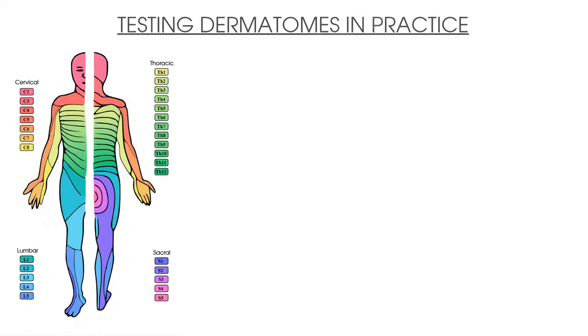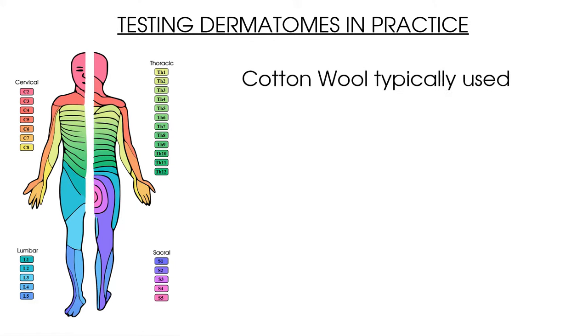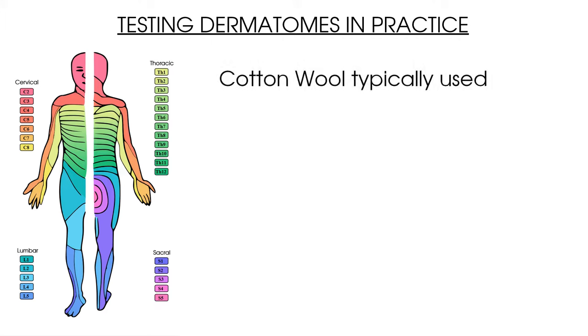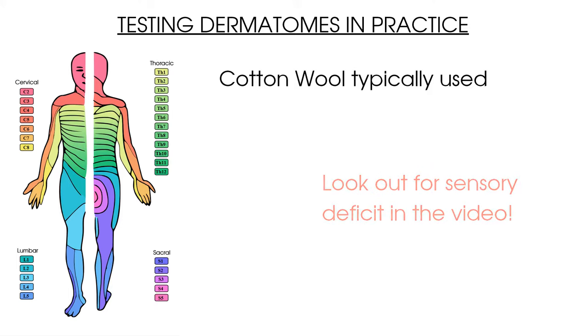Those are the areas used in our upper limb dermatomal testing. Now we're going to show you how we do the testing in practice. Cotton wool is often used as the main instrument to test your patient's ability to feel light touch, so that's what you'll see us using. Look out for a particular dermatome where our model is going to have a sensory deficit — see if you can work out which dermatome it is.